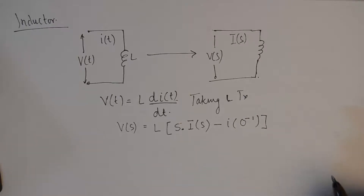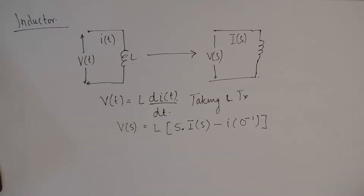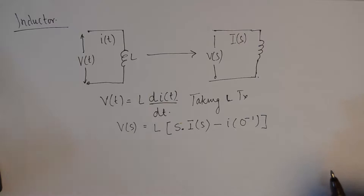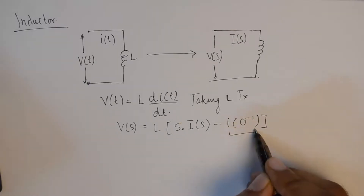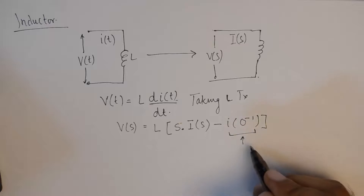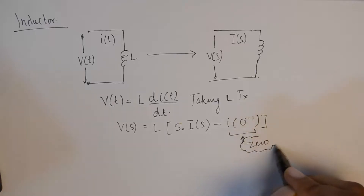We have studied the magical property of the inductor: whenever a DC voltage source is connected to an inductor, an exact voltage is developed on the inductor, thereby causing the initial current to be 0. This property is needed here because we need to substitute the initial value as 0 from that inference.